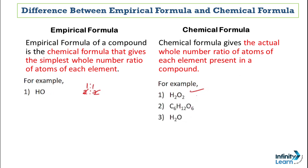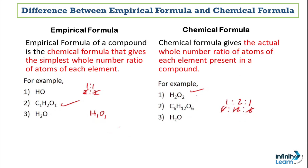The second example is glucose, whose chemical formula is C₆H₁₂O₆. To find the empirical formula: the ratio is 6, 12, 6 — simplifying to 1, 2, 1 — giving an empirical formula of CH₂O. As for water, its ratio is 2:1, which cannot be simplified further, so the chemical formula and empirical formula of water are the same (H₂O). The same case applies to carbon dioxide — both formulas are identical because they cannot be simplified further.